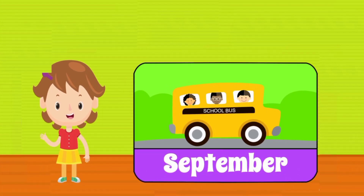September, the ninth month of the year, containing 30 days, coming after July.